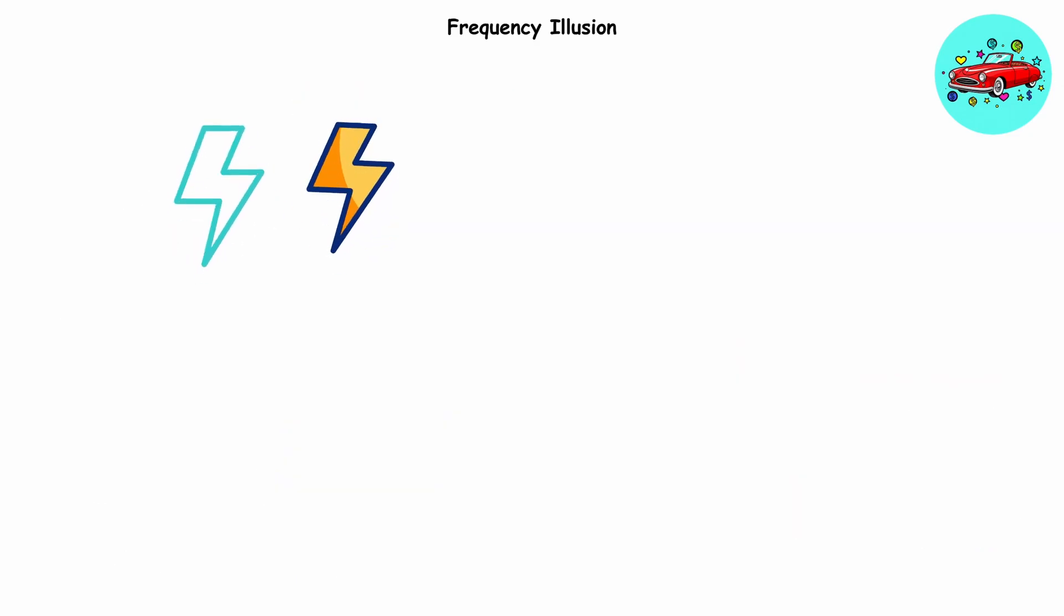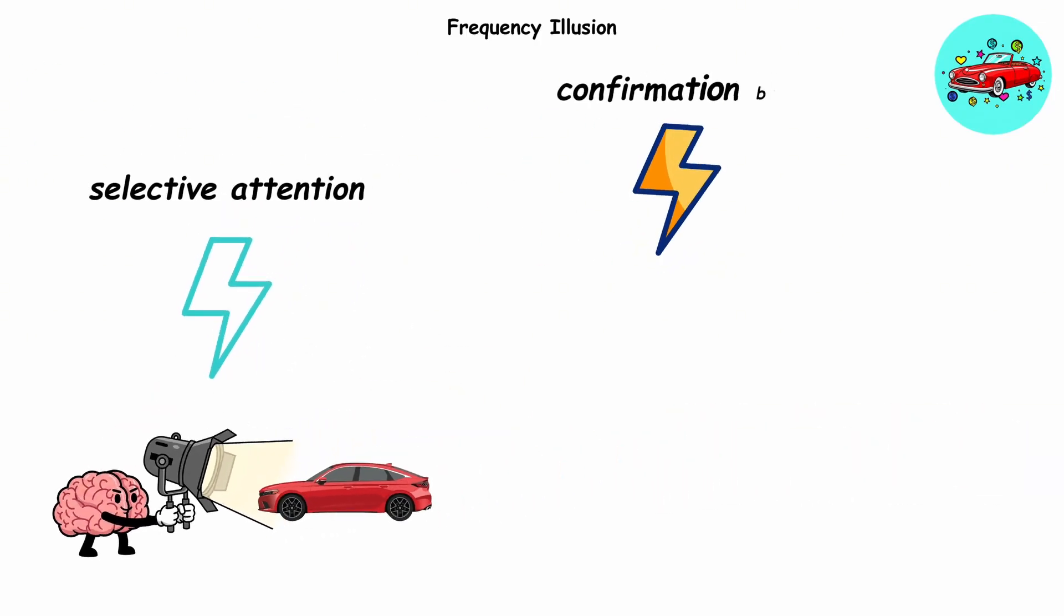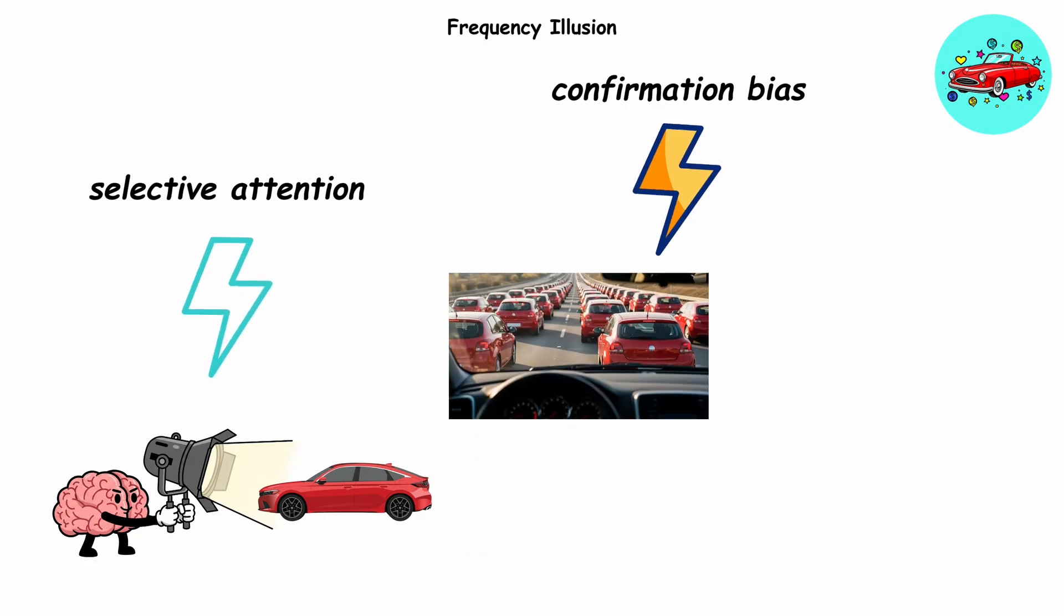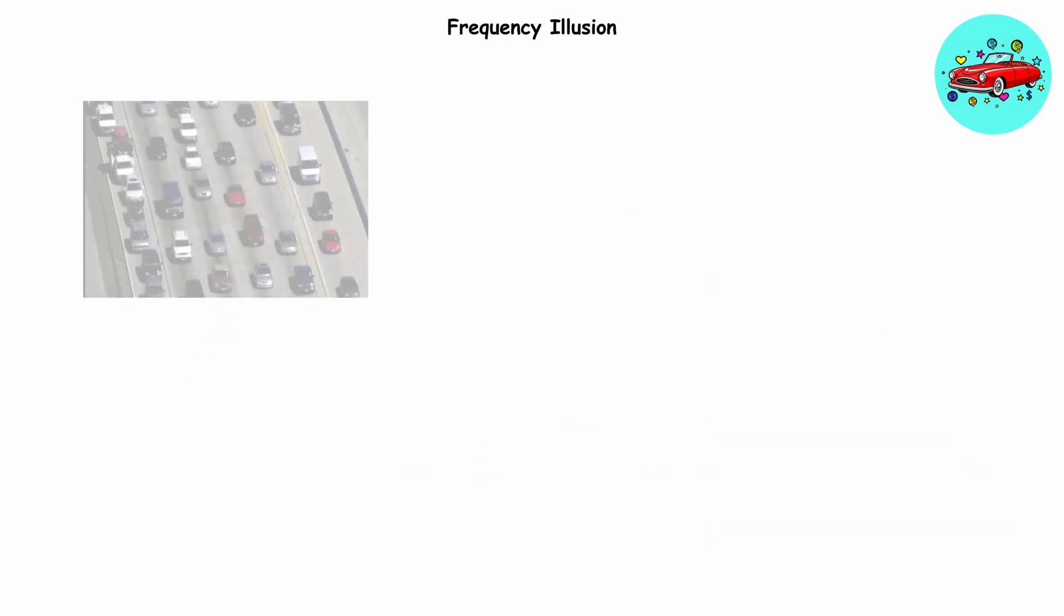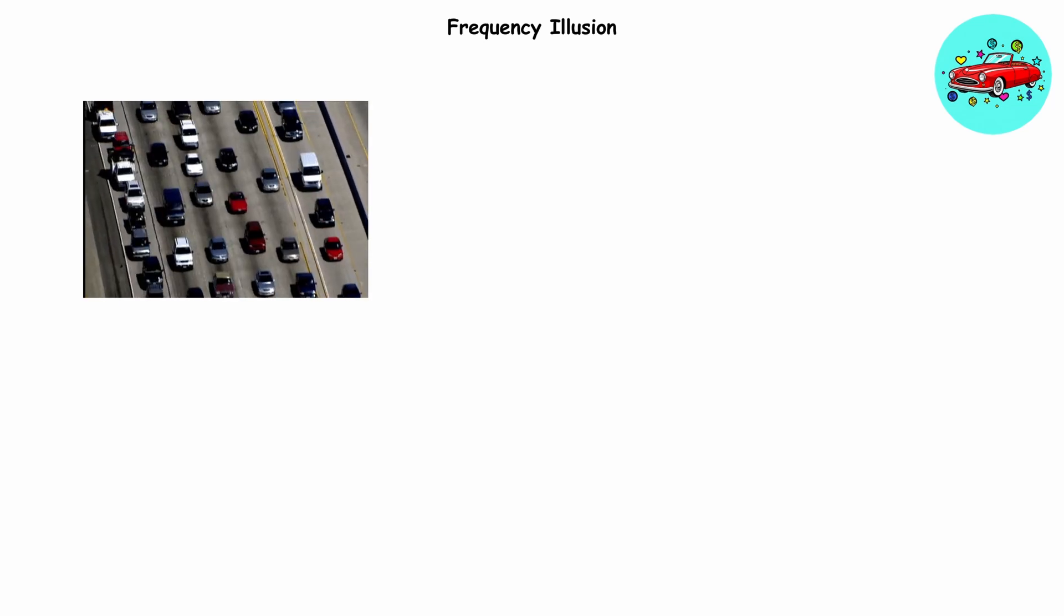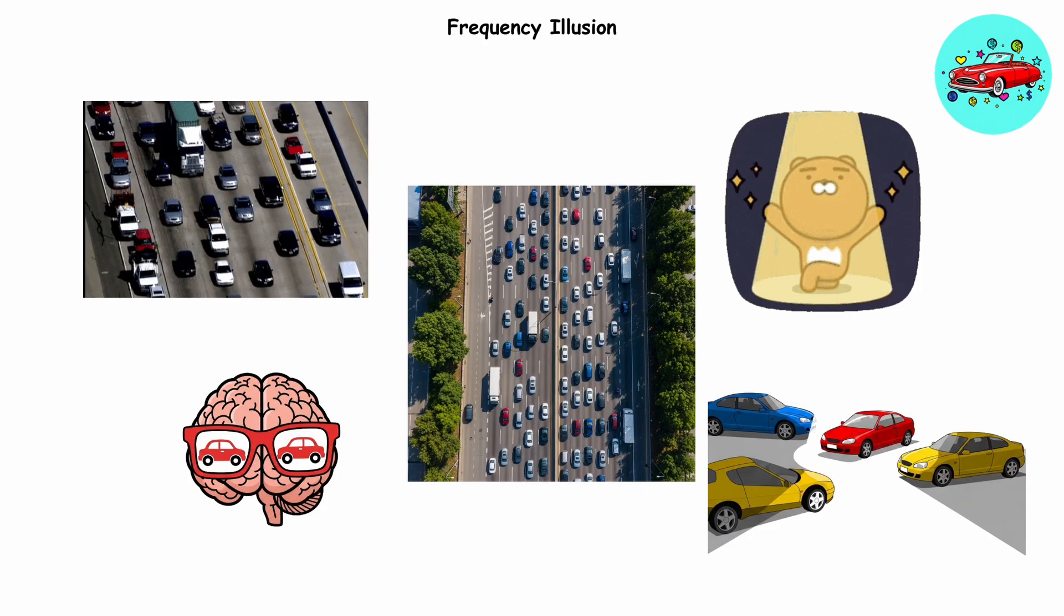Two forces power this glitch. First, selective attention. Your brain spotlights what's now relevant. Second, confirmation bias. Each red car you see convinces you your theory is true. Everyone's driving my car. Obviously, traffic didn't change. Your perception did. The highway's the same. Your brain just flipped the spotlight onto something new.